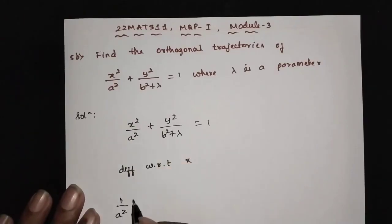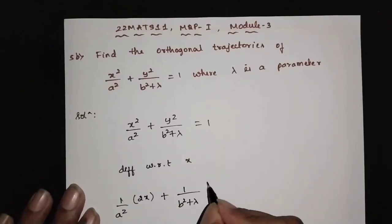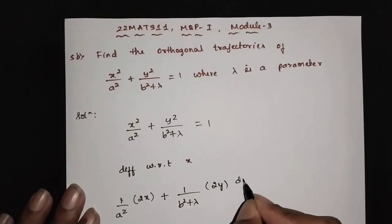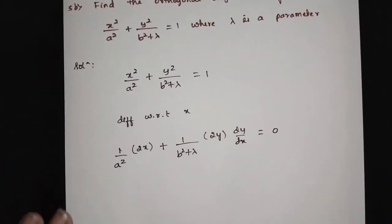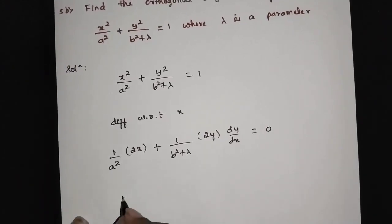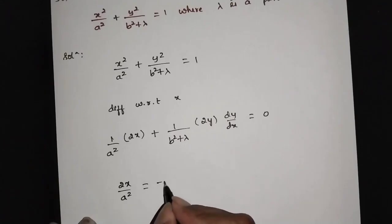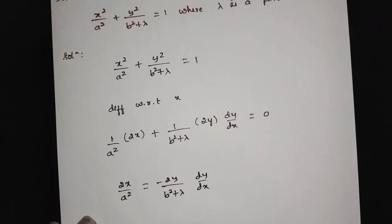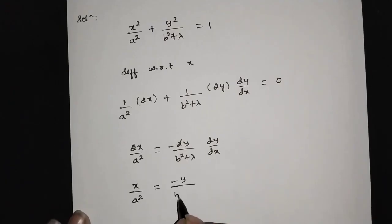Differentiating: 1 by a squared into 2x plus 1 by b squared plus lambda into 2y times dy/dx equals 0. Canceling the 2s: x by a squared plus y by (b squared plus lambda) times dy/dx equals 0.